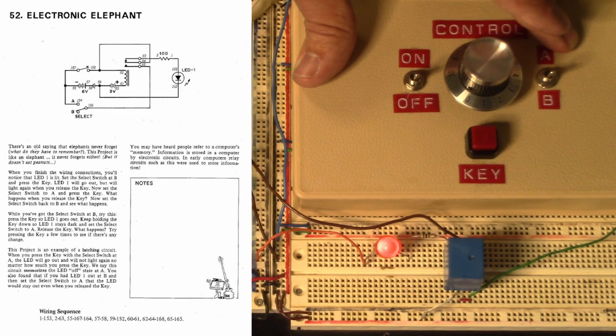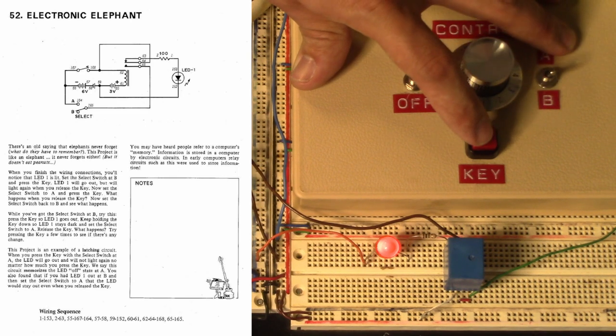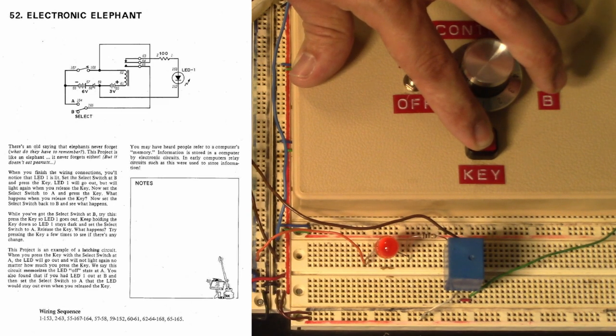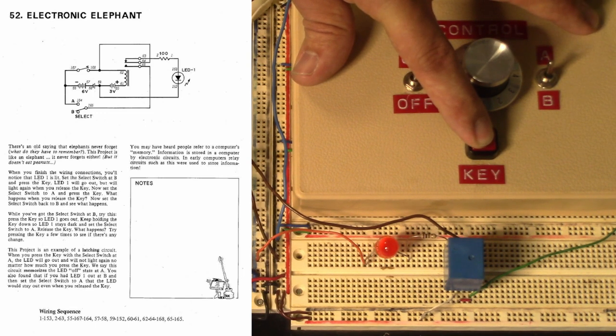While you've got the select switch at B, try this. Press the key so LED1 goes out. Keep holding the key down so LED1 stays dark and set the select switch to A. Release the key.